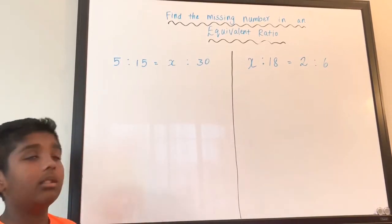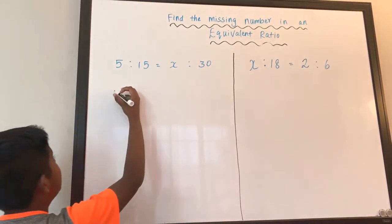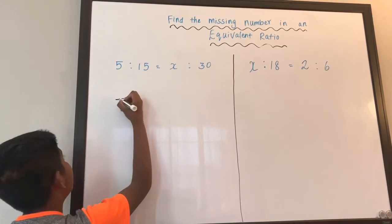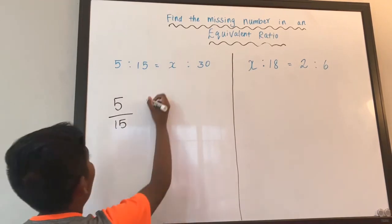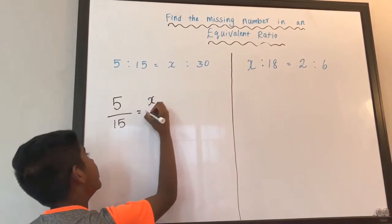So our first step is, we're going to write these in fractions. So 5 is to 15, which is gonna be 5 over 15. And then how are we gonna write this one? X over 30.